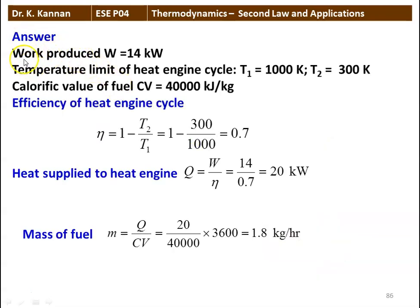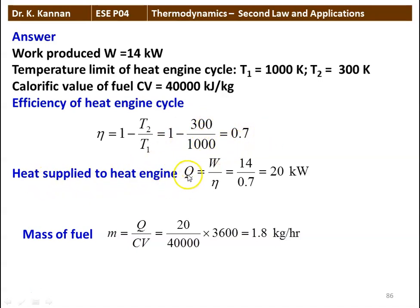Work produced W = 14 kilowatt. Temperature limits: T1 = 1000 Kelvin, T2 = 300 Kelvin. Calorific value Cv = 40,000 kJ/kg. Efficiency: η = 1 − T2/T1 = 1 − 300/1000 = 0.7. Heat supplied: Q = W / η = 14 / 0.7 = 20 kilowatt. Mass of fuel: M = heat supplied / calorific value = 20 / 40,000 × 3600 = 1.8 kilograms per hour. That is the answer.